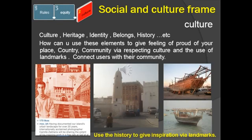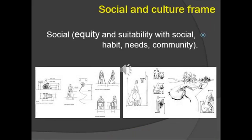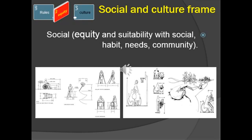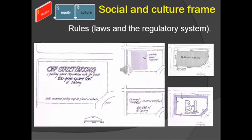The first frame is the social and cultural frame. We tried to insert from each region the main cultural issues in terms of identity, belonging, and history, because each design has to incorporate its unique element of identity. We also put into consideration the need to respect equity between users in terms of special needs and others — one of the major concerns in designing outdoor spaces. Additionally, we studied the laws and regulations that manage construction in the area.